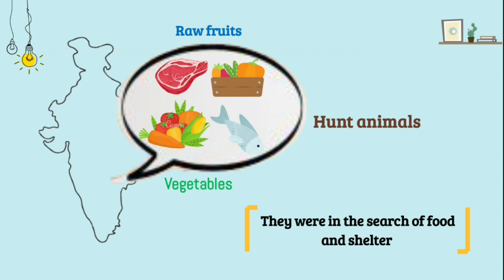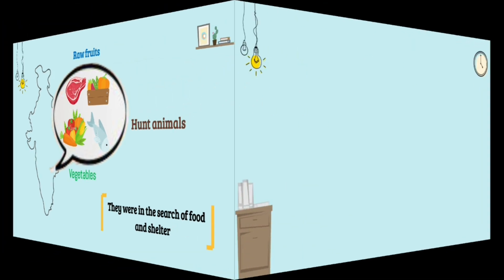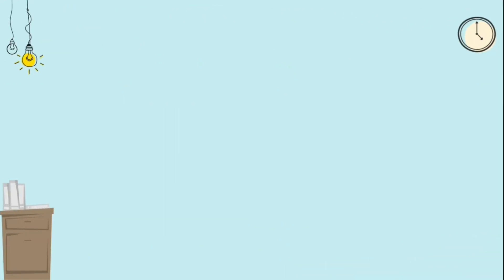They started to cultivate land and produce rice, wheat, etc. Thus agriculture was born.